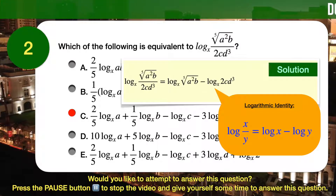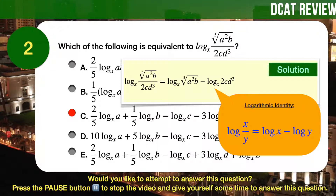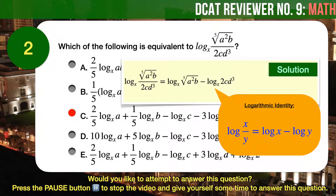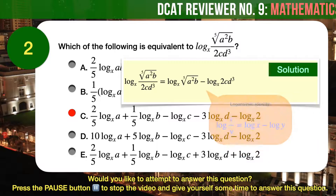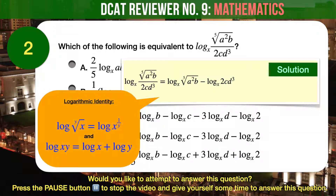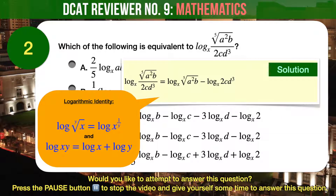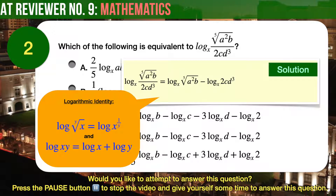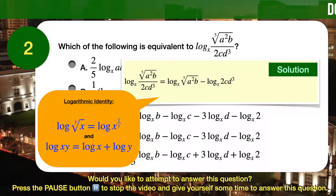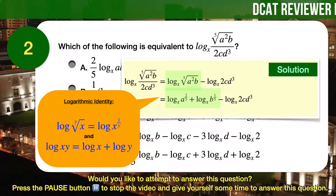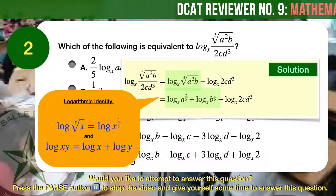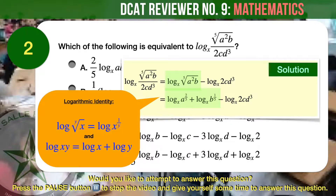Therefore, we can rewrite the given expression as: logarithm base x of the fifth root of a squared b, minus the logarithm base x of 2cd cubed. Next, the logarithm of the y-th root of x can be rewritten as logarithm of x raised to 1 over y. And the logarithm of xy can be rewritten as the logarithm of x plus the logarithm of y. Therefore, we can rewrite the first term as logarithm base x of a raised to 2/5, plus logarithm base x of b raised to 1/5.